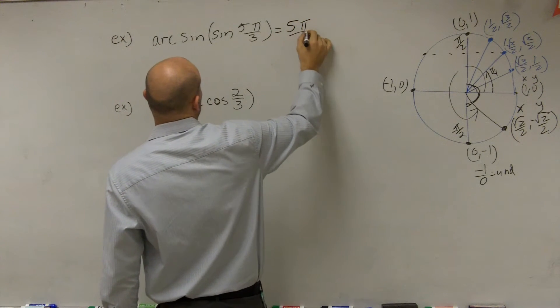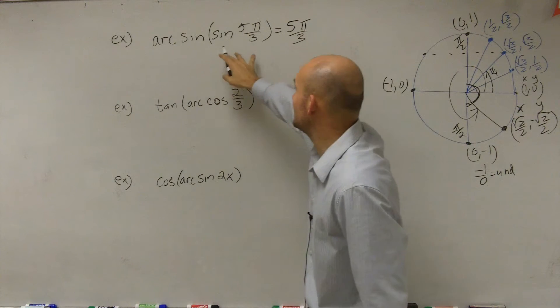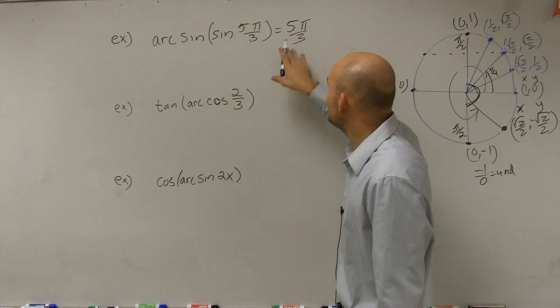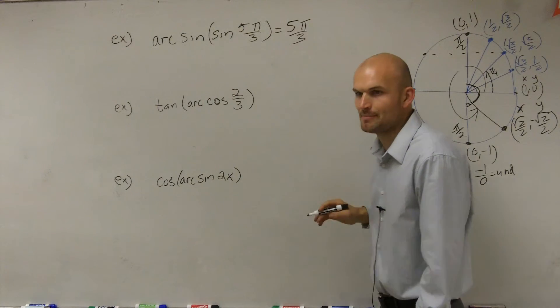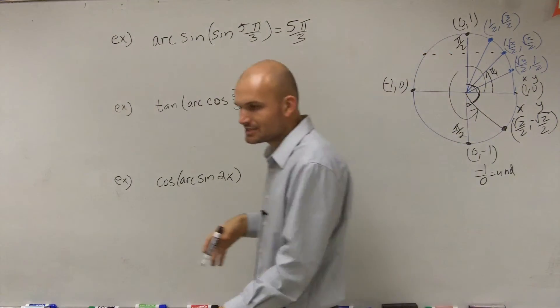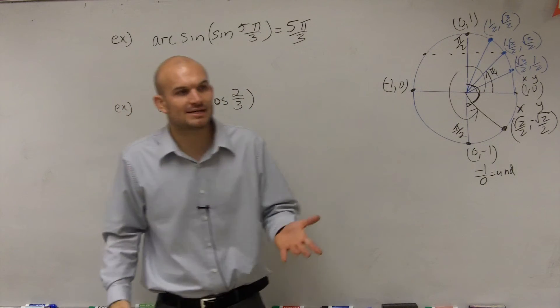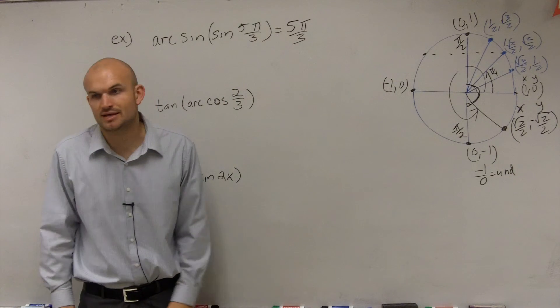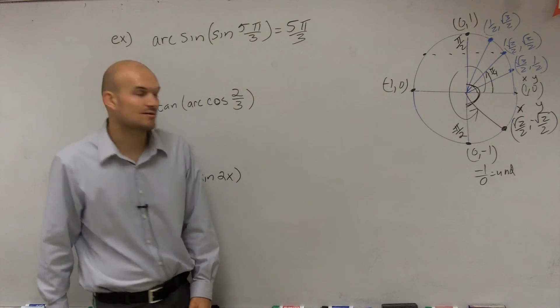But there becomes a problem because we are still taking the inverse sine of sine of 5π over 3. And what we notice is if we get our answer of 5π over 3, remember, for sine, it has to be within the range of negative π halves and π halves. And is 5π over 3 within that range? No.